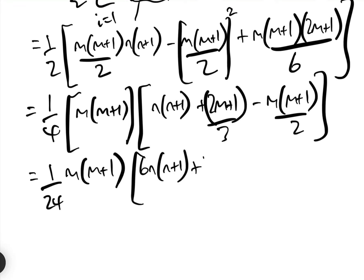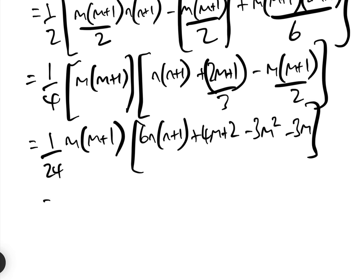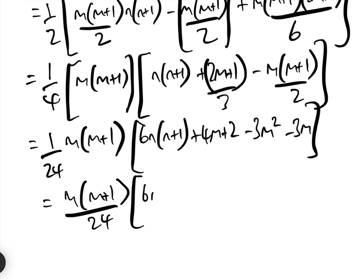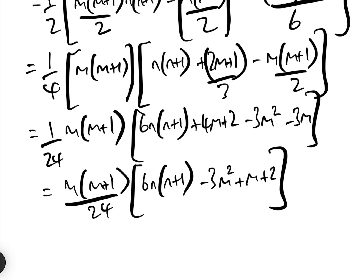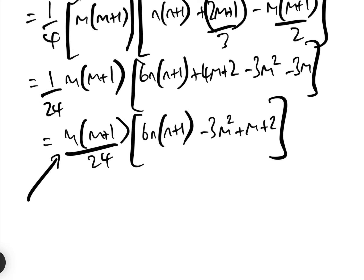Simplifying just a tiny bit more, that gives us m(m+1) over 24, times 6n(n+1) minus 3m squared plus m plus 2. And that is the general formula for the sum between i equals 1 and m, j equals i and n, of i times j.